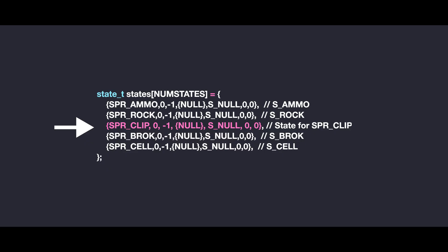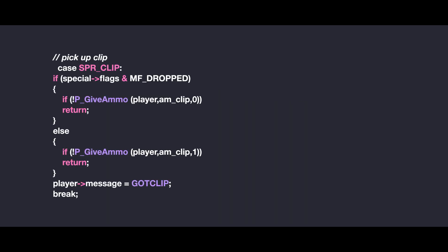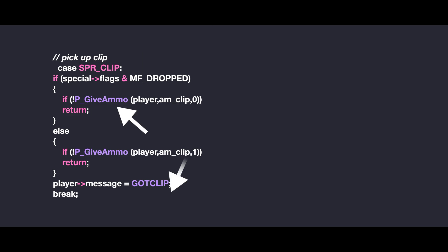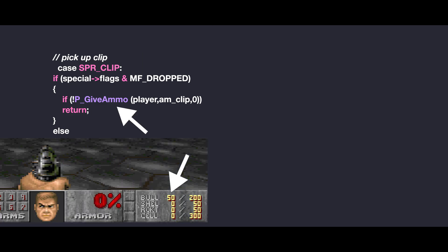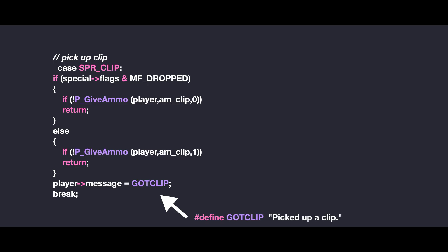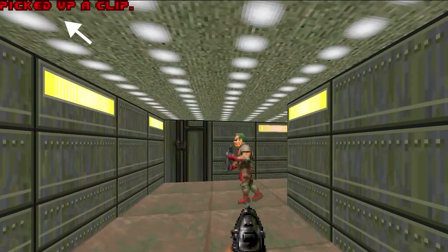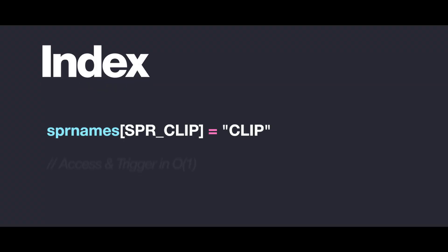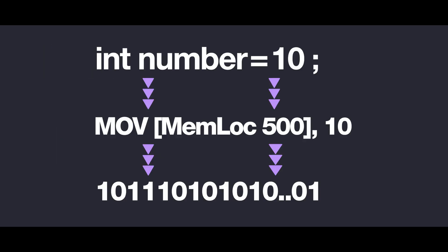This index is then used in the states array, where it is associated with a specific state including its frame duration of the animation and other properties. Finally, to connect everything: if the player picks up ammo from an object identified as SPR_CLIP, the game gives the player ammo and displays the message. This essential feature wouldn't be possible without integers, as they serve as an index to access elements in constant time.